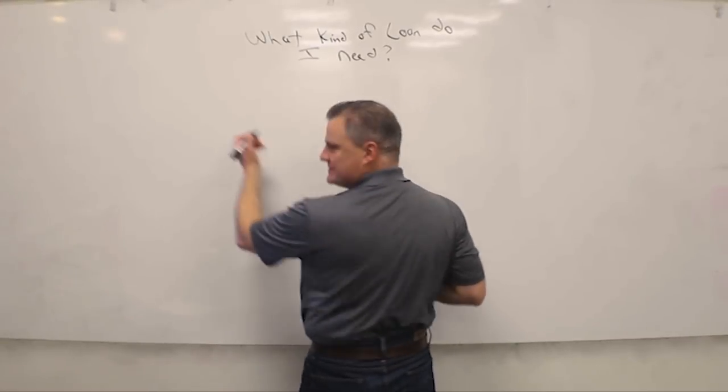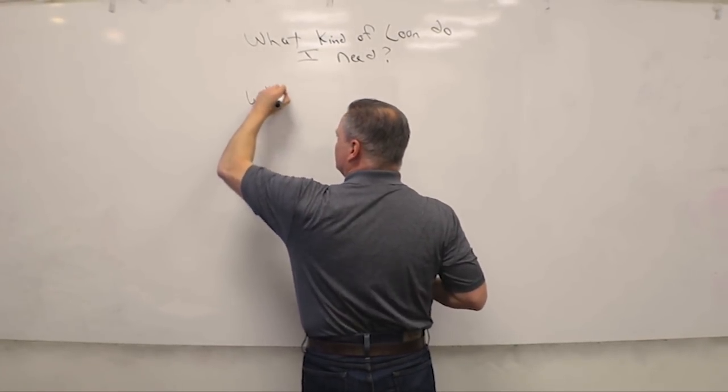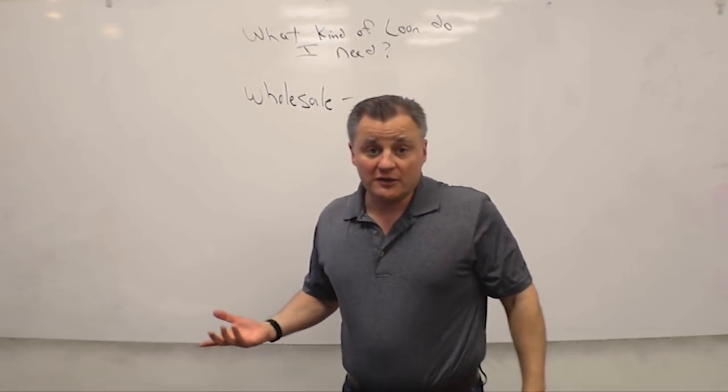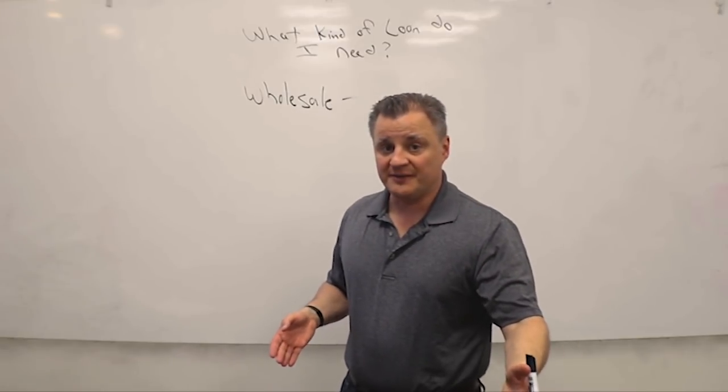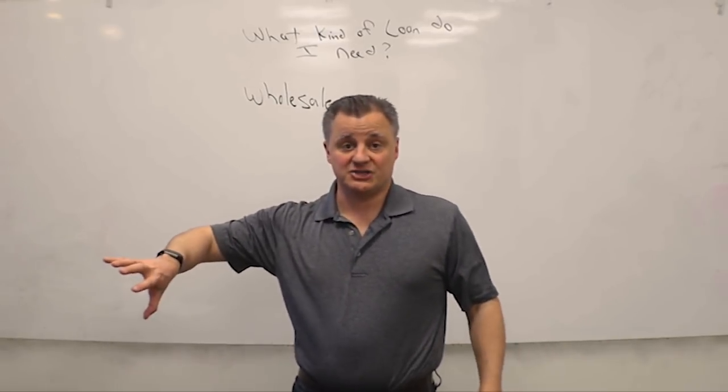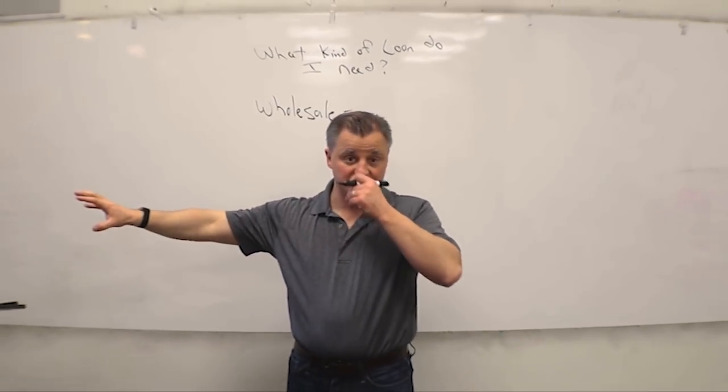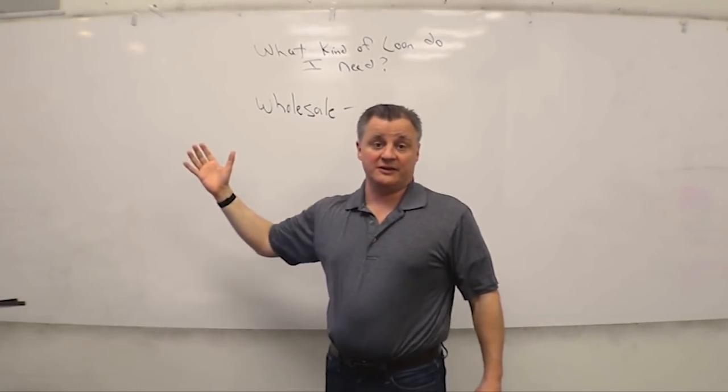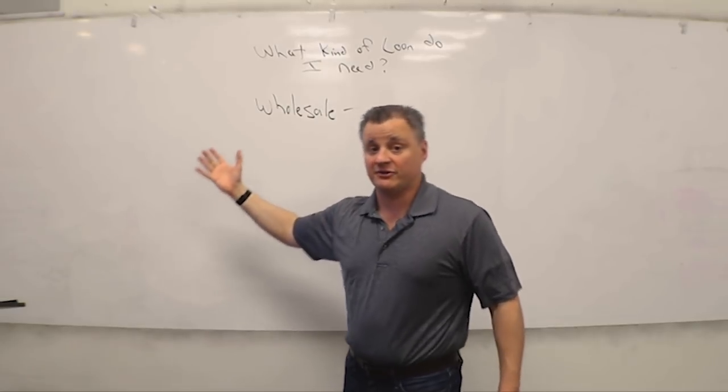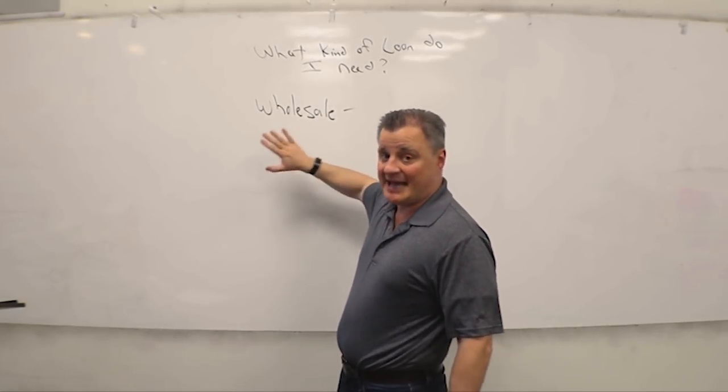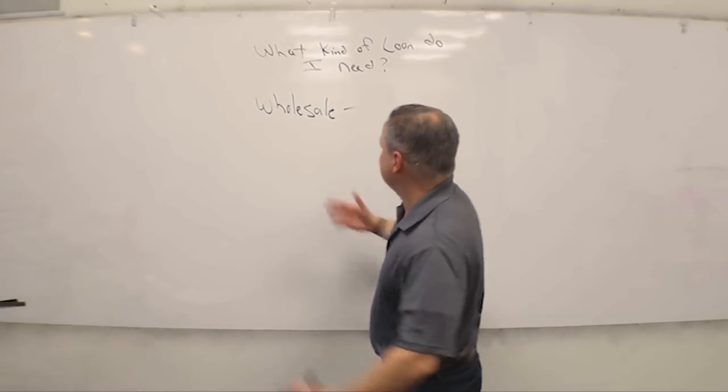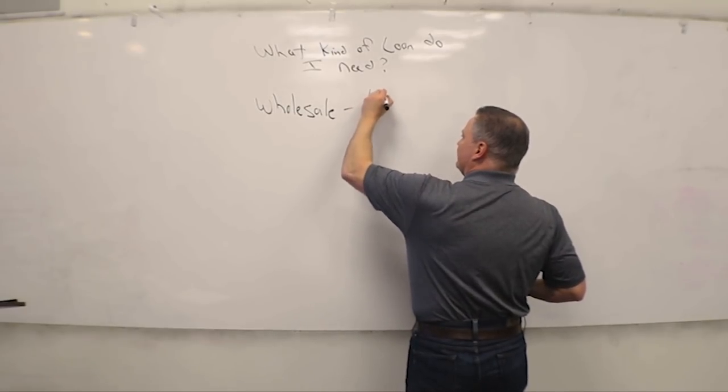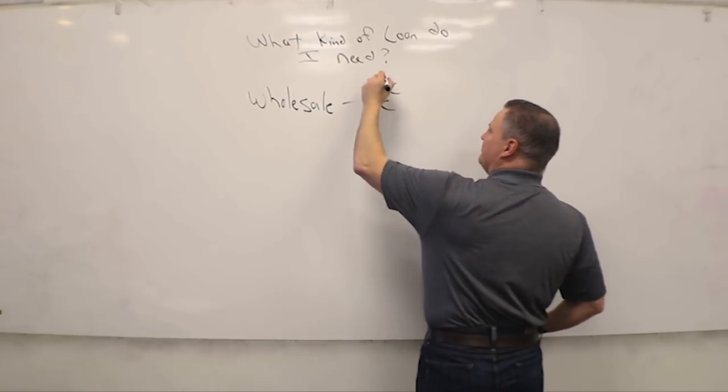So we're going to talk about what kind of loan do you need for the deal that you got. Let's start with deal number one, you got a wholesale. If you got a wholesale deal, you may not need a loan at all because maybe you're going to put the property under agreement, get control of the property, and then you're going to sell your contract to another investor and take an assignment fee at closing. Aside from maybe you need a business loan to get yourself going through an unsecured line of credit or a credit card for business capital.